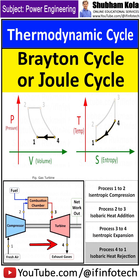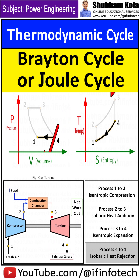Process 4 to 1 is the isobaric heat rejection process, where heat is rejected from the gas in the heat exchanger at constant pressure. Since it is a heat rejection process, the working gas temperature drops from state 4 to state 1.